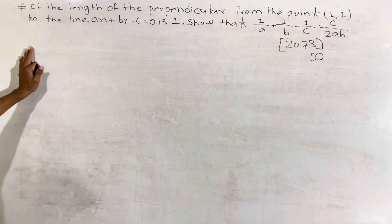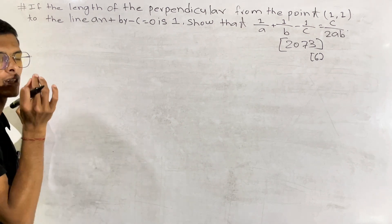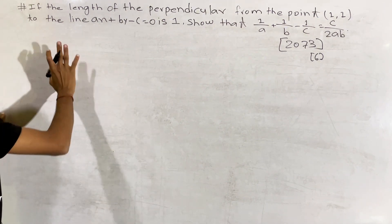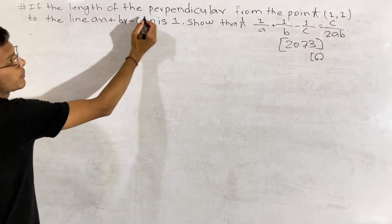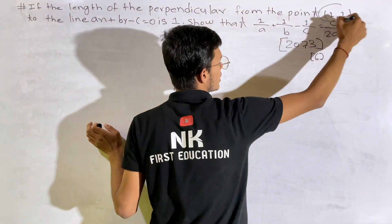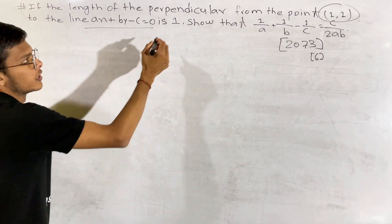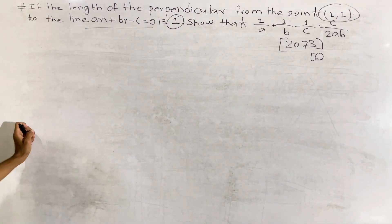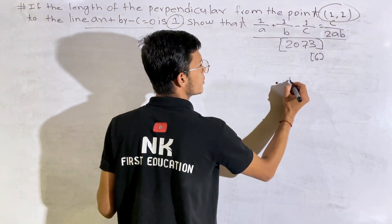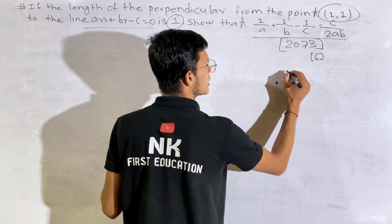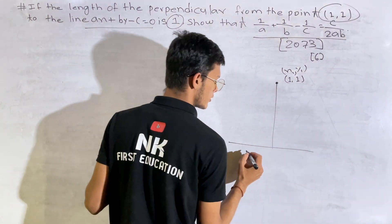What do we have to do? It's a simple formula that we have to do with the numerical calculation. The question is: if the length of the perpendicular from the point to the line is given, and the perpendicular length is 1 meter, then we have to find this. The point is (1, 2), so x1 and y1.